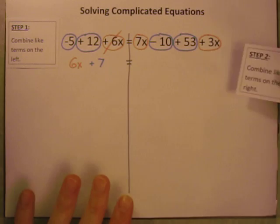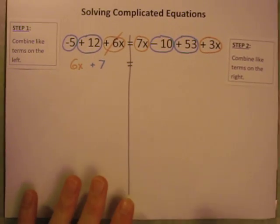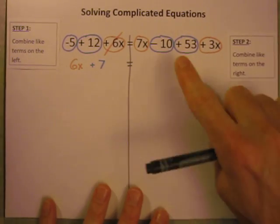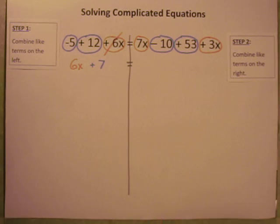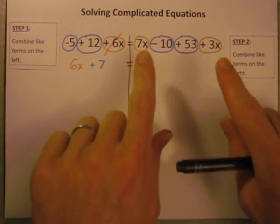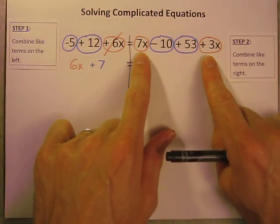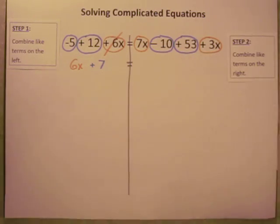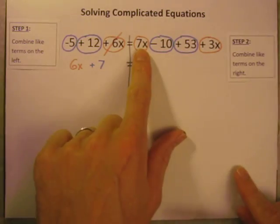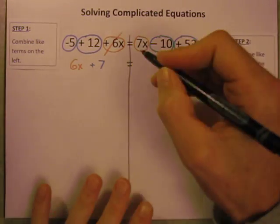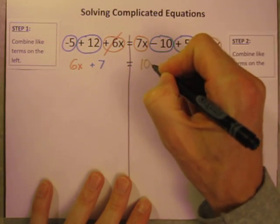So step one, combine like terms on the left hand side. Step two, combine like terms on the right hand side. So let's do the same thing over here now. Let's combine our x's first. I've got a 7x and a 3x. How many total x's is that over there? 7x's and 3x's make a total of 10x's. 10x.